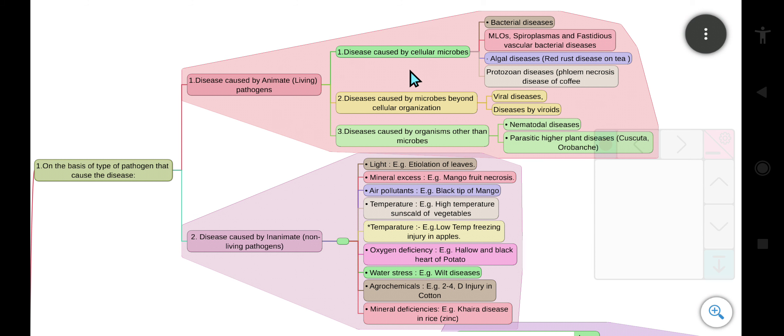In this category, diseases are caused by cellular microbes. The first one is bacterial diseases, second one is mycoplasma-like organisms, spiroplasmas and fastidious vascular bacterial diseases. Algal diseases, example is red rust disease on tea, and the last one is protozoal diseases. The example of this is phloem necrosis disease of coffee.